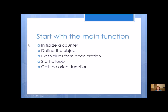Start with the main function — build from the bottom up. The main function is going to initialize a counter, define the Finch object, get the values from acceleration, start a loop, and inside that loop you're going to call the orient function, increment the counter, and do some displaying to make it user friendly. Think about how you do each one of these steps — try to do as much as you can on your own, and then I will show you some code to help you out if you need it.